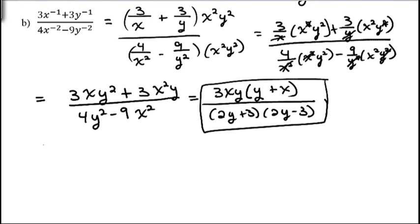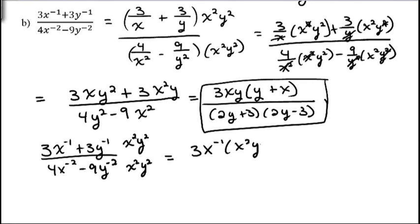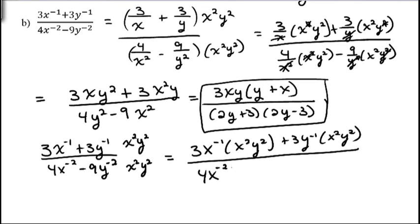You could use the other method for this one as well. So 3x to the negative first plus 3y to the negative first, over 4x to the negative second minus 9y to the negative second. Again, x to the negative second and y to the negative second are the biggest, so we're going to multiply by x squared y squared. So we have 3x to the negative first times x squared y squared, plus 3y to the negative first times x squared y squared, over 4x to the negative second times x squared y squared, minus 9y to the negative second times x squared y squared.